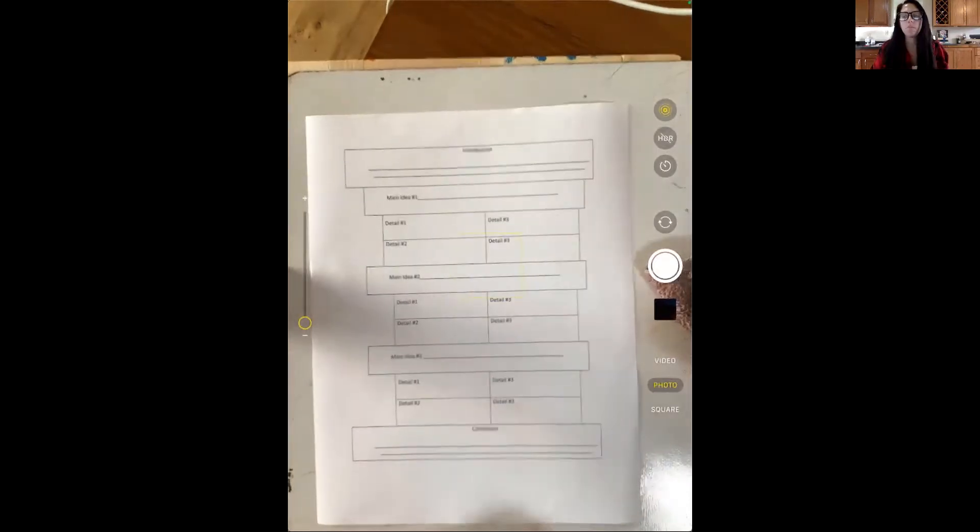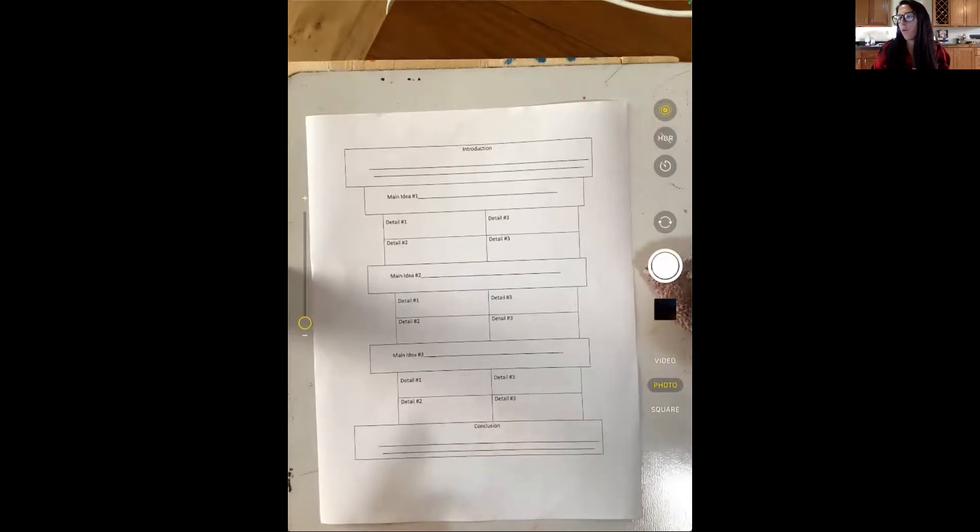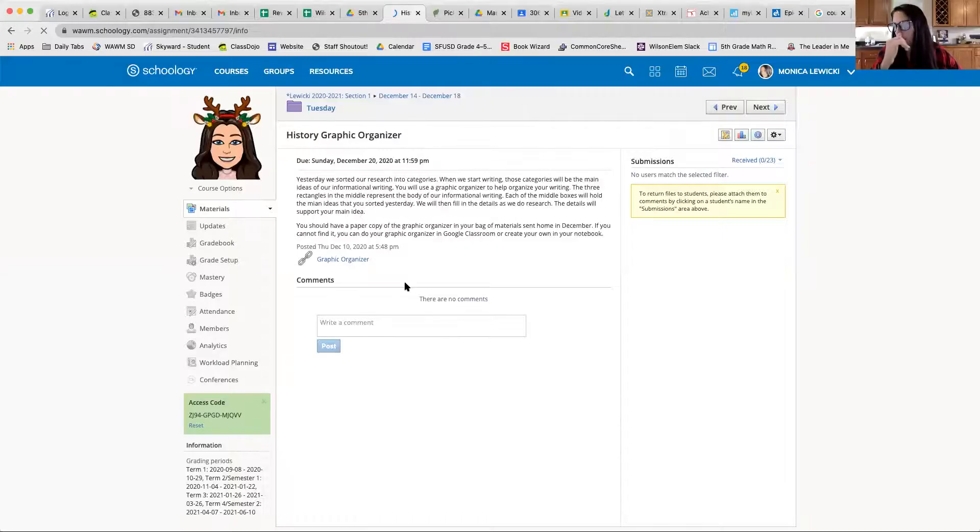Otherwise, this sheet is on Google Classroom. If you go through the assignment for today, if you go into this week, you go to today is Tuesday, and you find History Graphic Organizer, let me share that screen. So if you go to History Graphic Organizer under Tuesday...